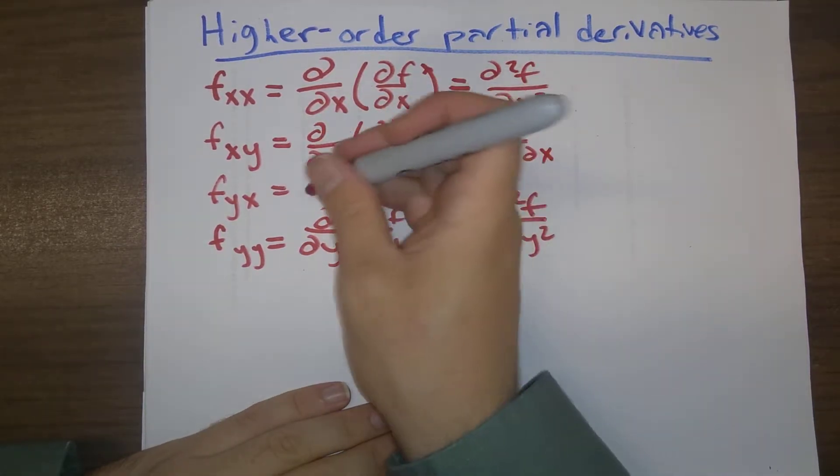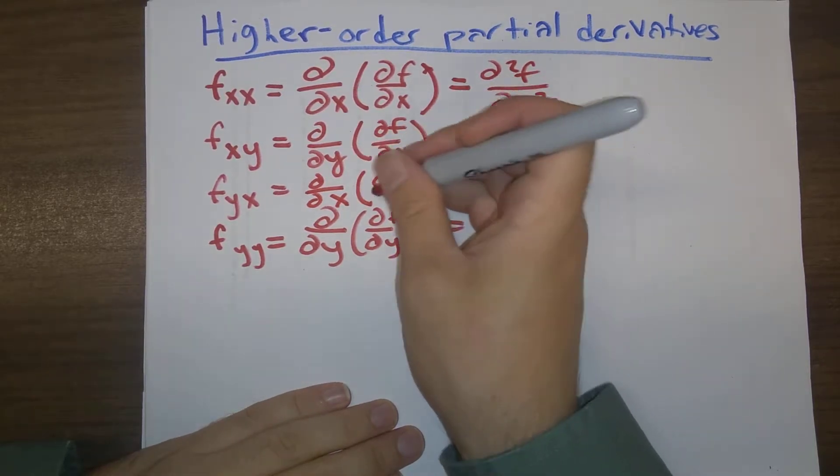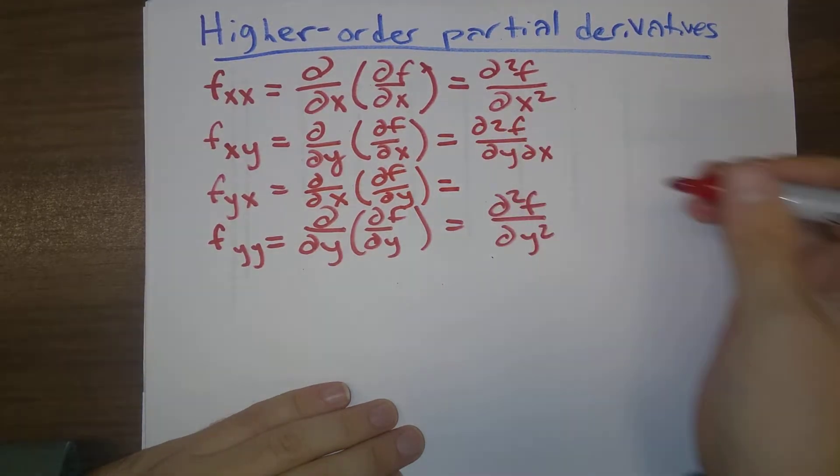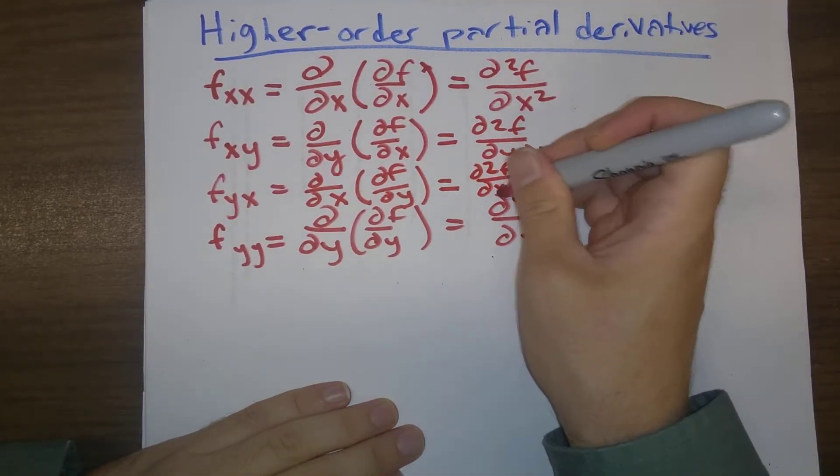Or, we could have partial derivative with respect to x, so first you take the partial derivative with respect to y, and then with respect to x. So that would be d squared f dx dy.